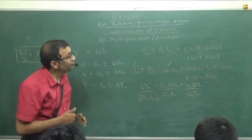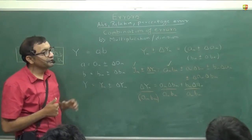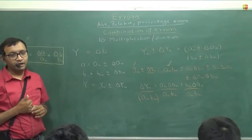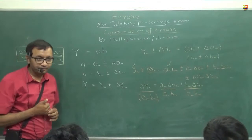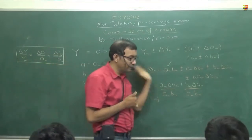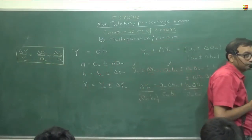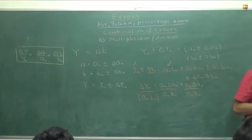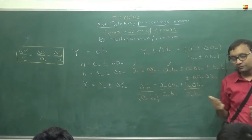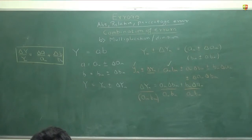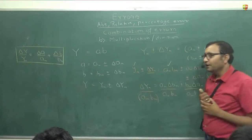The same can be proved for division as well — the result is the same. If Y equals A divided by B, the relative errors also get added. You can prove this similarly.